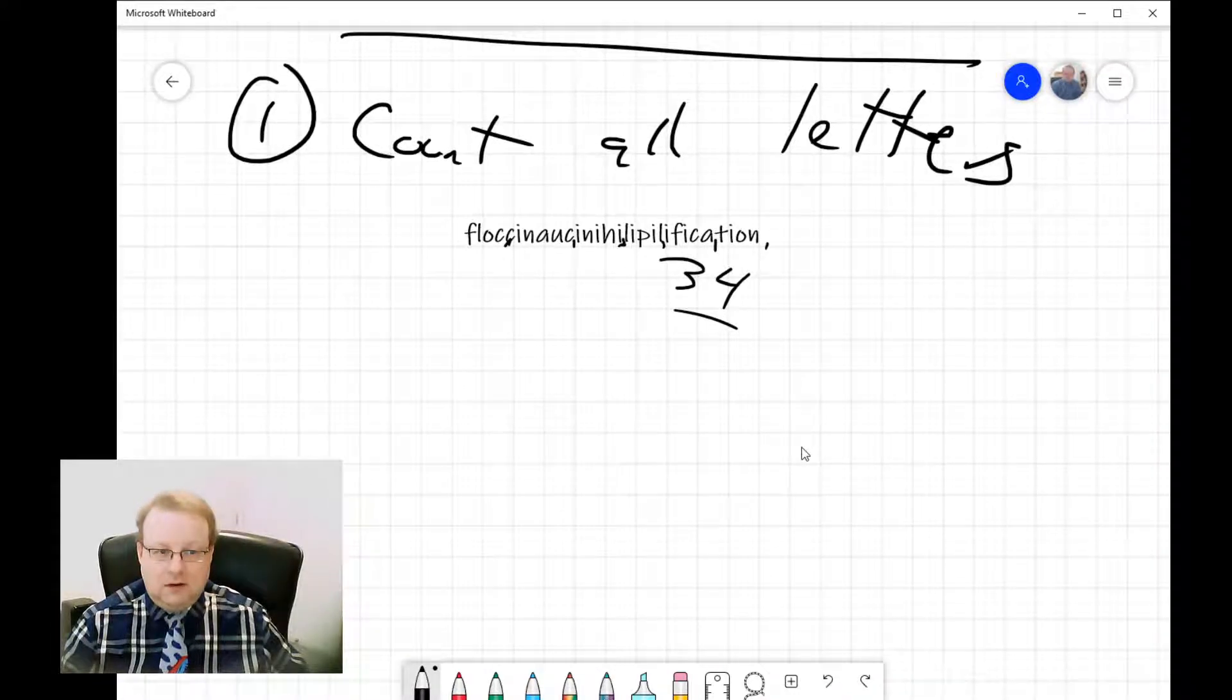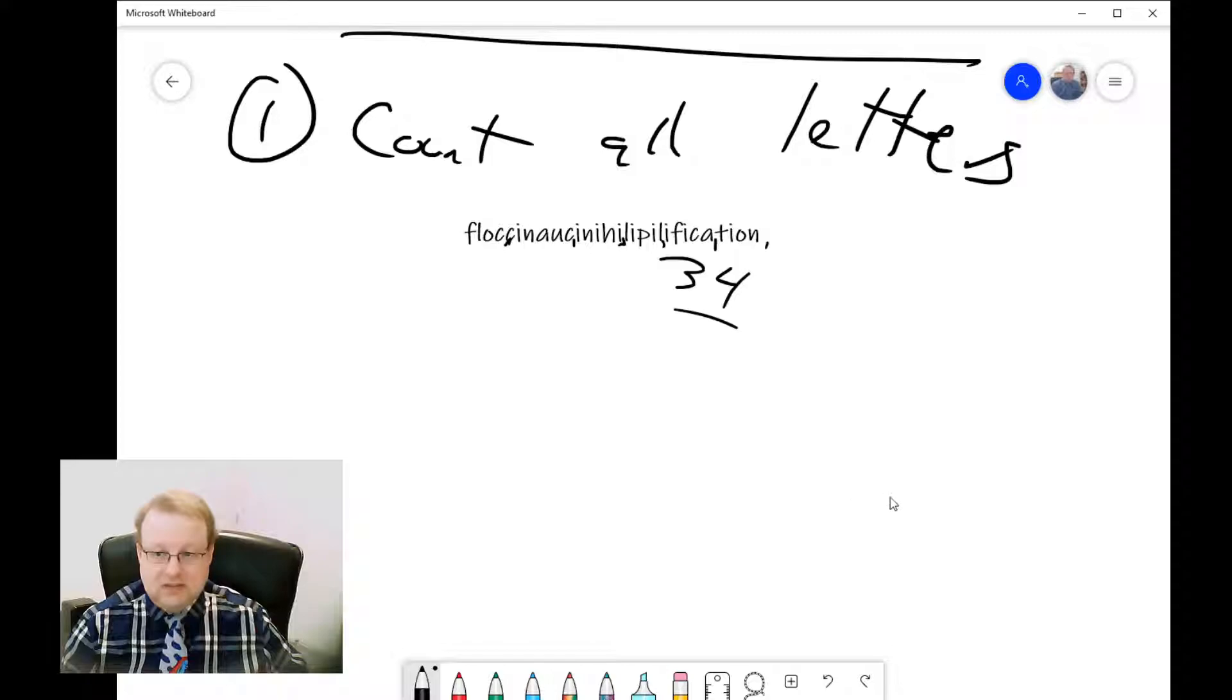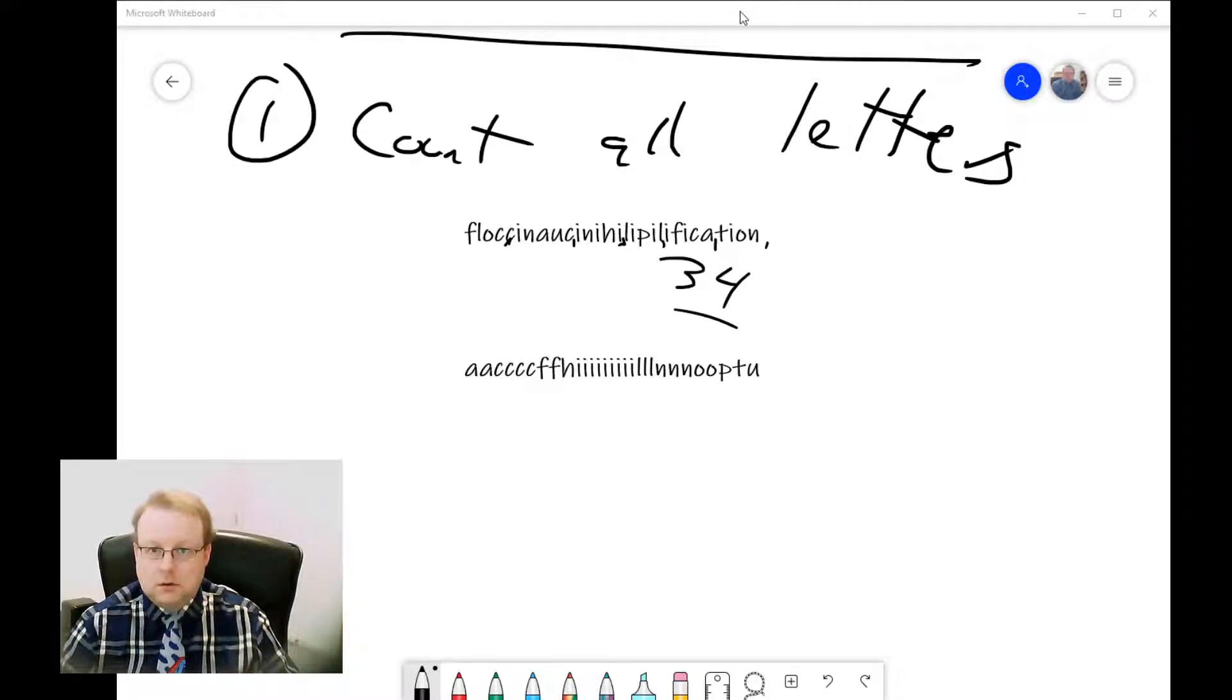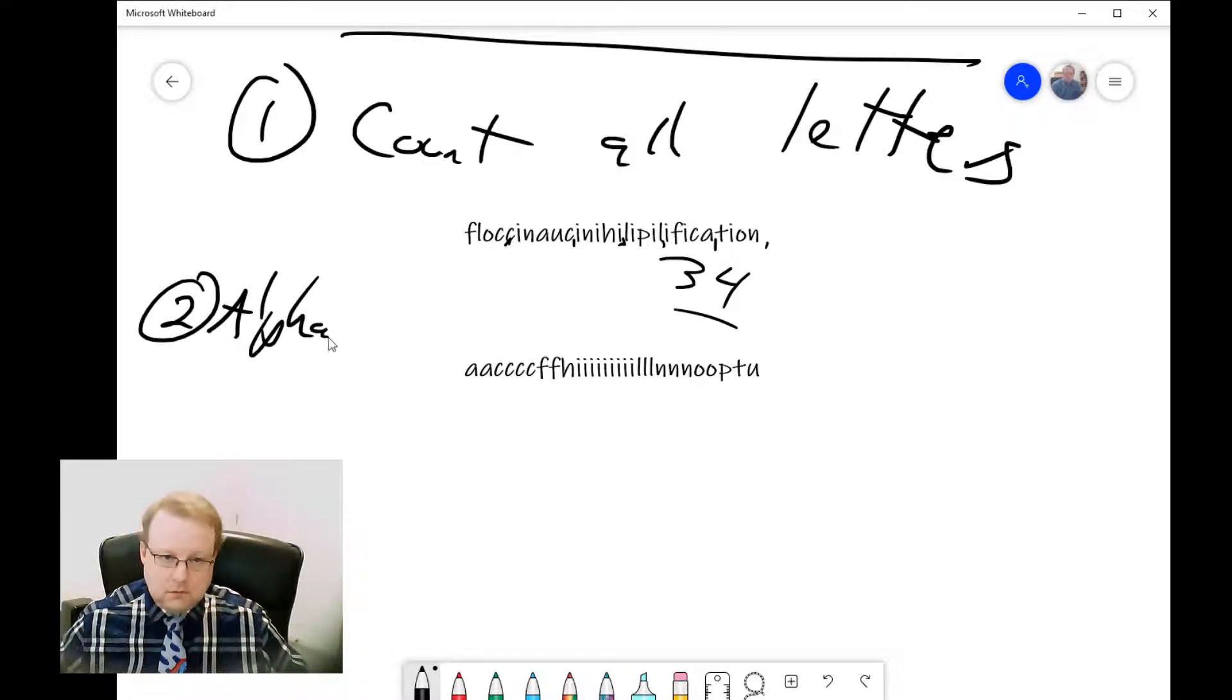In our next step, it's going to be easier if we alphabetize the letters in this word. It'll make it much easier to count how many we have of each. Now that it's alphabetized, we can easily see we've got two A's, four C's, two F's, an H, and we can count all of these I's.